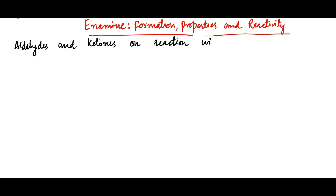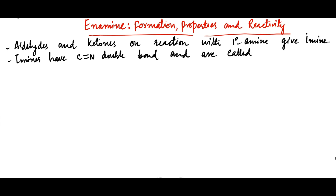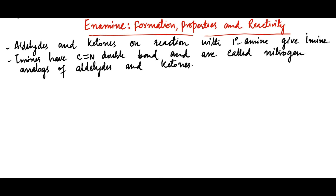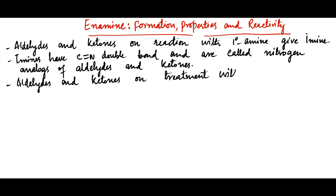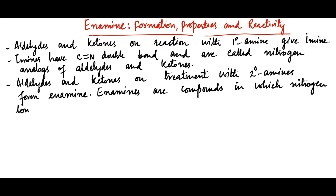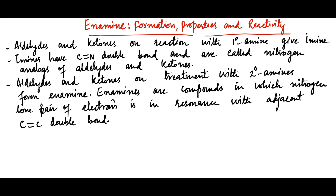Aldehydes and ketones on reaction with primary amine give imines. Imines have a C-N double bond and are called nitrogen analogs of aldehydes and ketones. However, aldehydes and ketones on treatment with secondary amines result in the formation of enamine. Enamines are compounds in which the nitrogen lone pair electrons are in resonance with the adjacent C-C double bond.